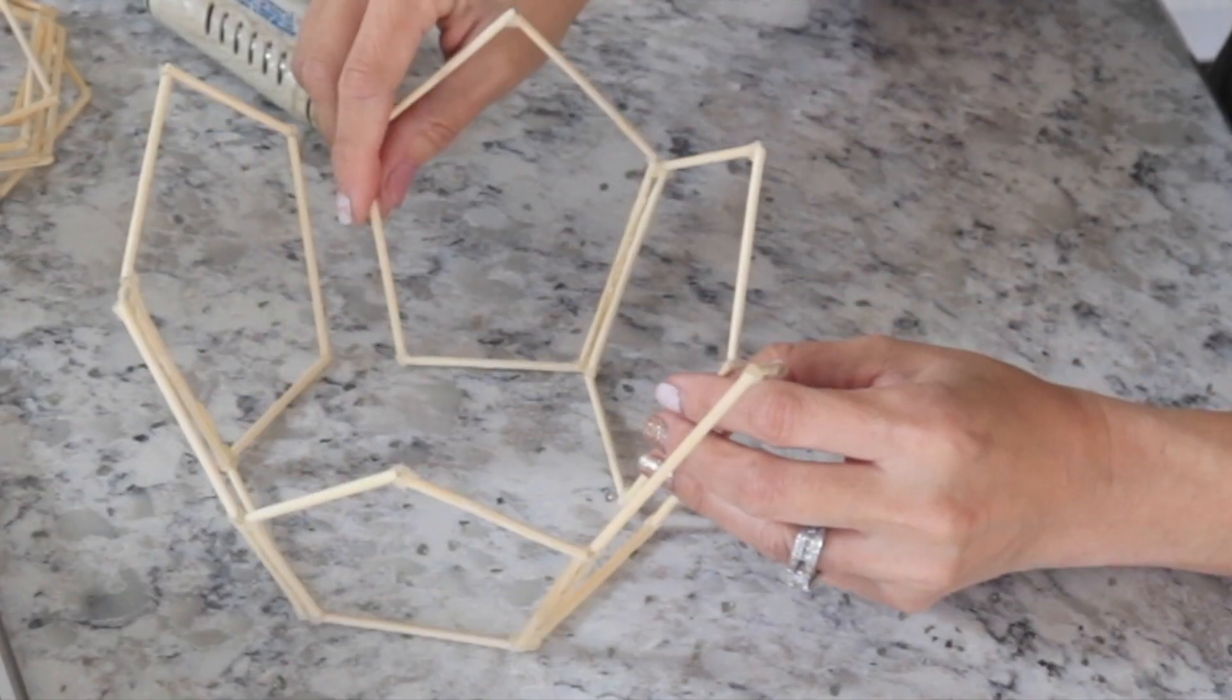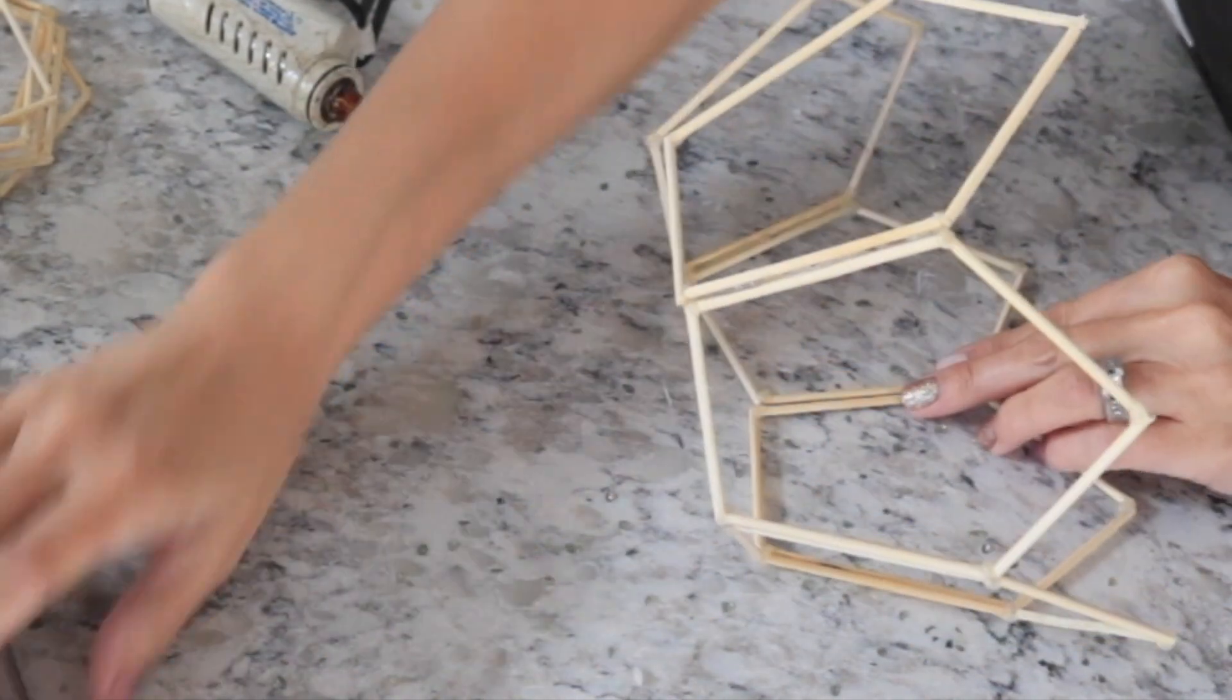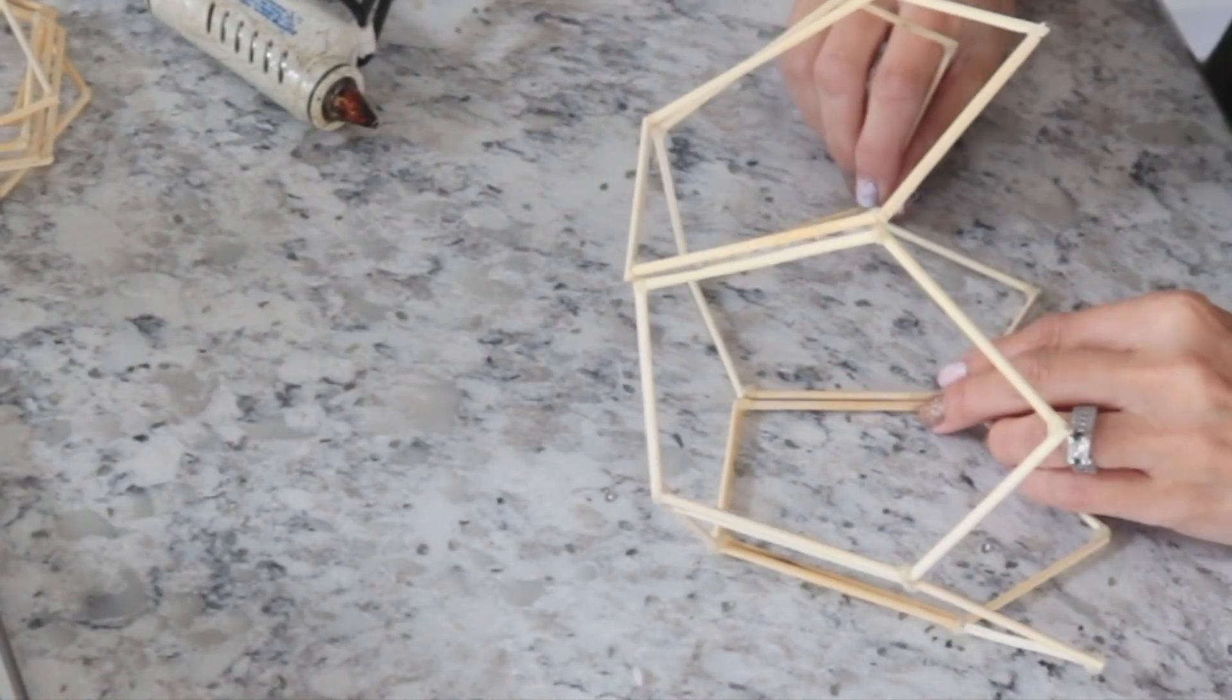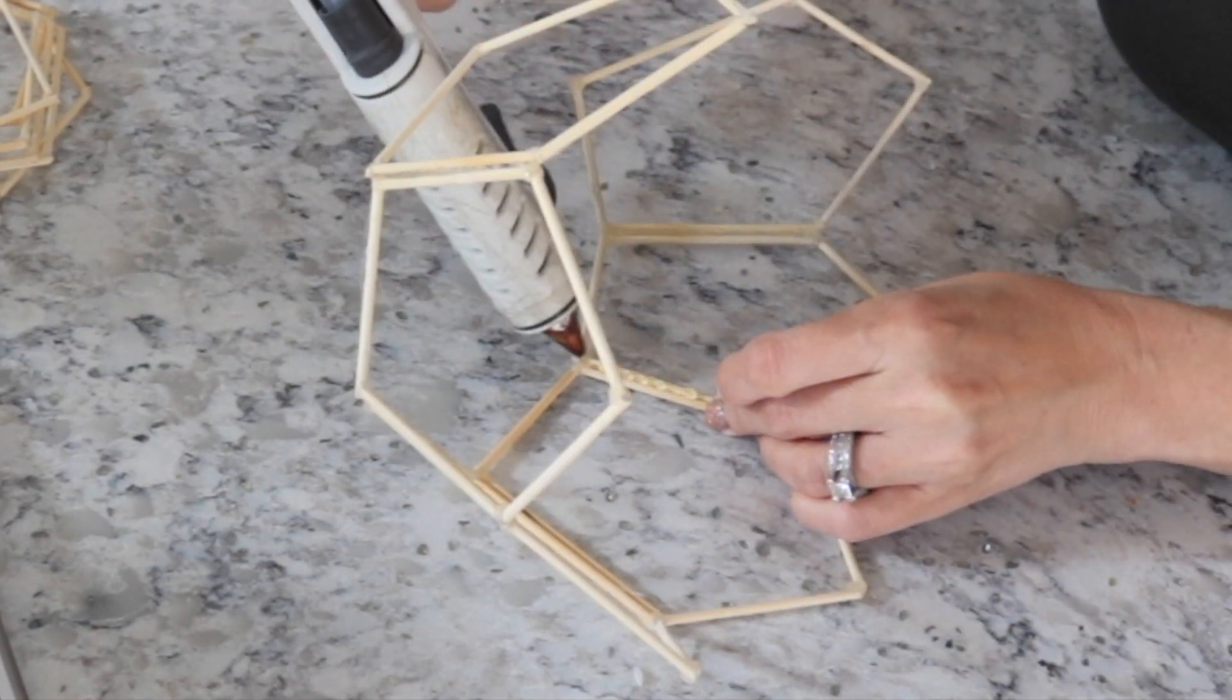Next I'm going to glue those two pieces to the rest of it, and you have one whole part of it complete. Now you're going to go ahead and do this again with those other six pieces and then we are going to glue them together.